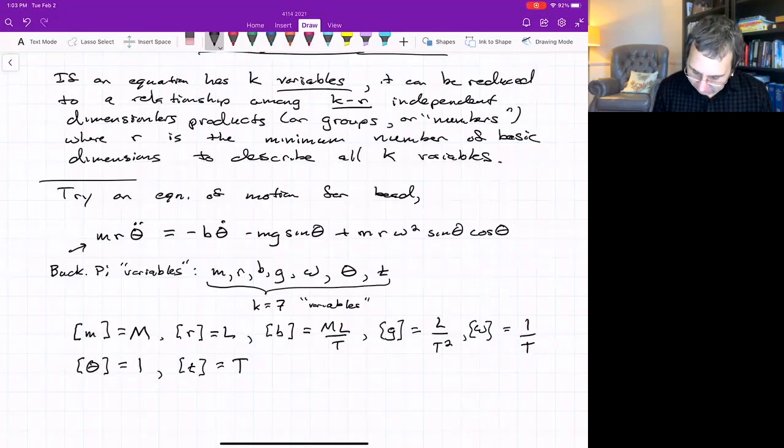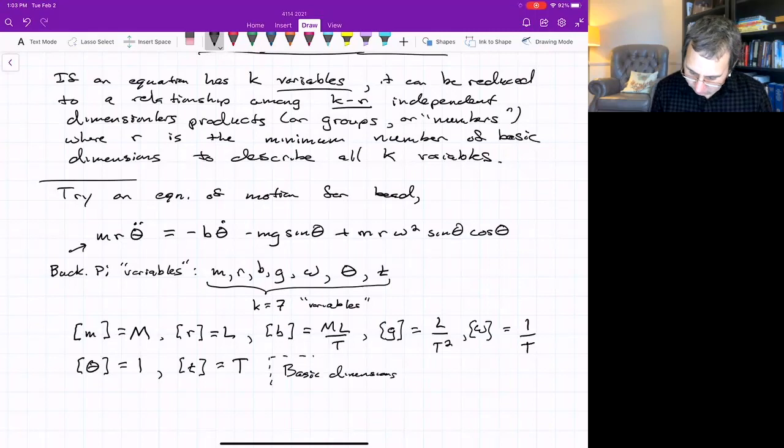So if you look at how many things do we have here, what basic dimensions? We only mentioned three. Do we use all three here? We got mass, we got length, we got time. R equals three. That's the minimum number of basic dimensions to describe all of these variables in the equation.